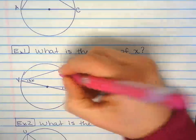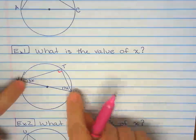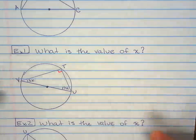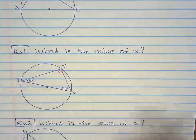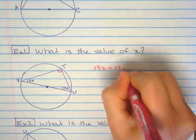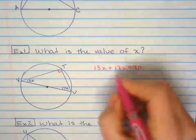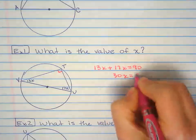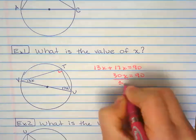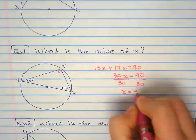Since I know that T is a right angle, 90, that means these two added together will be 90. These two are complementary angles. So 13X plus 17X equals 90. Combine like terms. 30X equals 90. X is 3.